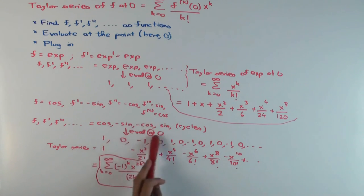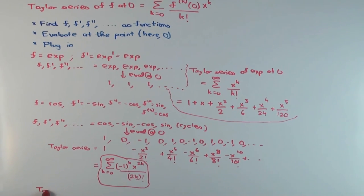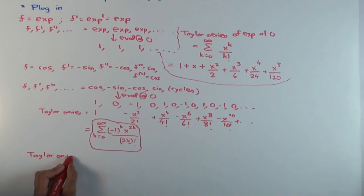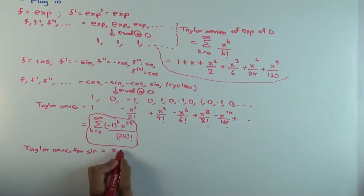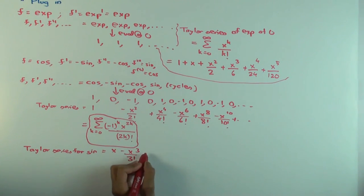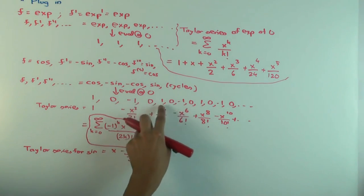The sequence of derivatives for sine will also be periodic. It will in fact be the same four things, it will just be cycled a little differently. So if you wrote sine instead of cosine you'll still get the same periodic thing but it'll start off at a different position. It will be like 0, 1, 0, -1, 0, 1, 0, -1.